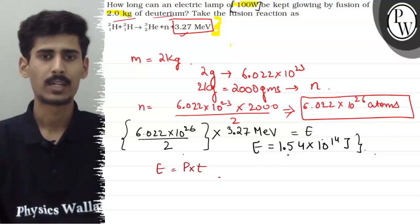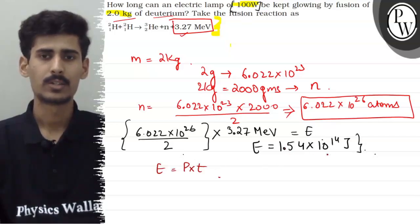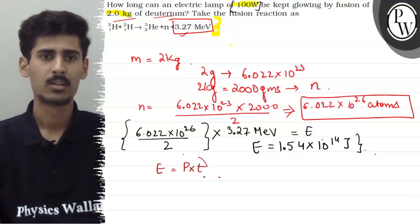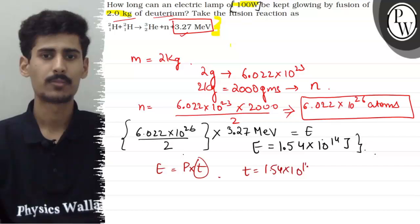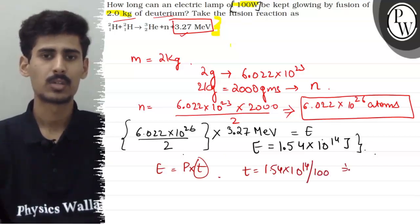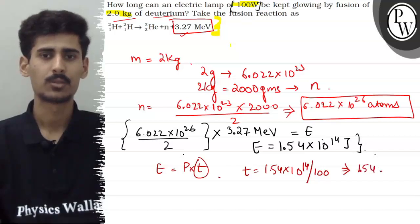Our energy here is 1.54 into 10 raise to the power 14 joules. Basically, here we need to find time. Power is given as 100 watts. So, basically time will be equal to 1.54 into 10 raise to the power 14 divided by power which is 100 watts. So, from here our time comes out to be 1.54 into 10 raise to the power 12 seconds.